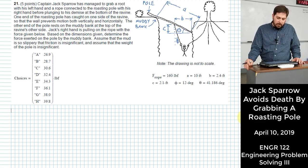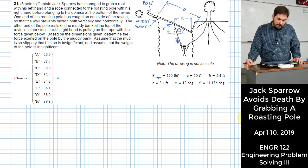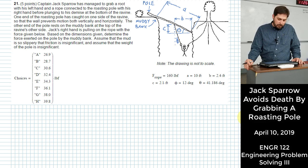One end of the roasting pole has caught on one side of the ravine so that the wall prevents motion both vertically and horizontally. The other end of the pole rests on the muddy bank at the top of the ravine's other side.